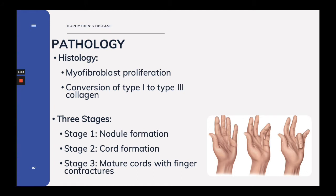What causes Dupuytren's? The major contractile element is the myofibroblast. Myofibroblasts generate significant contractile forces and transmit this force to surrounding collagen matrices. The second thing involved is the conversion of type 1 to type 3 collagen. For example, normal fascia contains approximately 5% type 3 collagen, whereas in Dupuytren's disease it contains approximately 40%. Dupuytren's is a progressive disease that can be thought of in three stages.